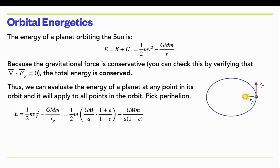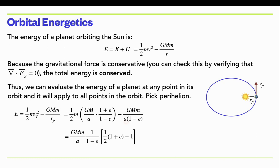The perihelion velocity was the square root of this term, so when you square it, the square root goes away. The perihelion distance is just the semi-major axis times one minus the eccentricity. So we can simplify this. If you factor out GMm/a from each term, you have a GMm/a here and a GMm/a here. You can also factor out a (1 − e) from each term.